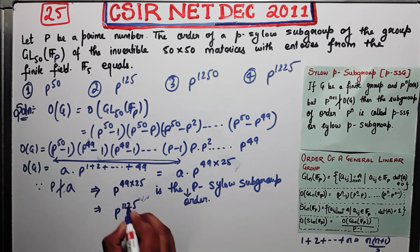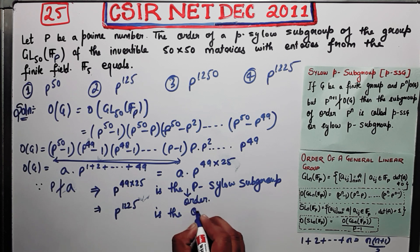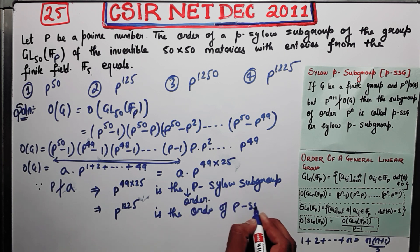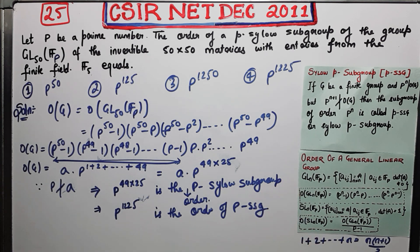So the order of the P-Sylow subgroup is P^1225. This is a very easy question — the only things required are the order formula for the general linear group and the definition of the P-Sylow subgroup. If you know those two things, you are done. Thank you guys.